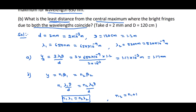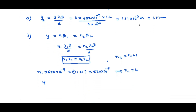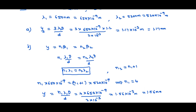The least distance from the central maximum is y = n₁λ₁D/d = 4 × 650 × 10⁻⁹ × 1.2 / (2 × 10⁻³) = 1.56 × 10⁻³ m, which is 1.56 mm. This is the way of solving these numericals. Thank you.